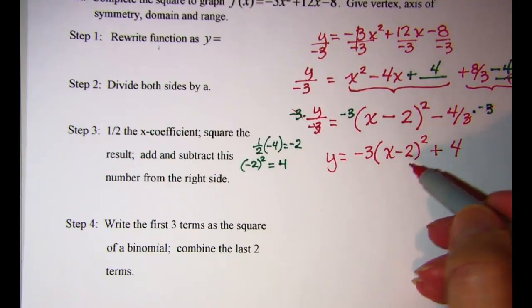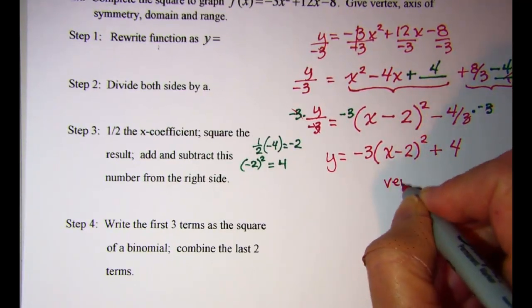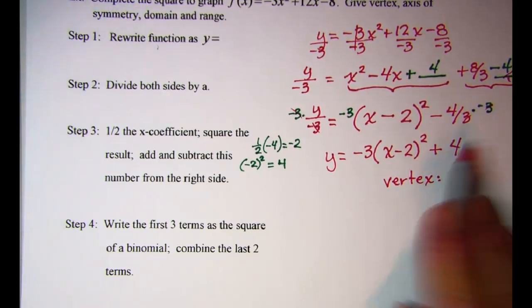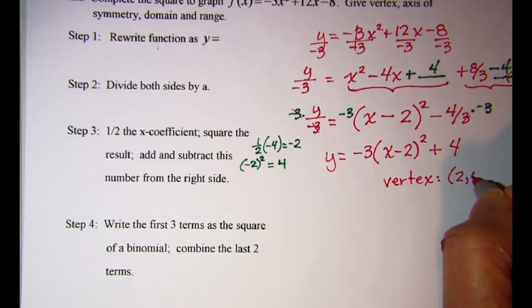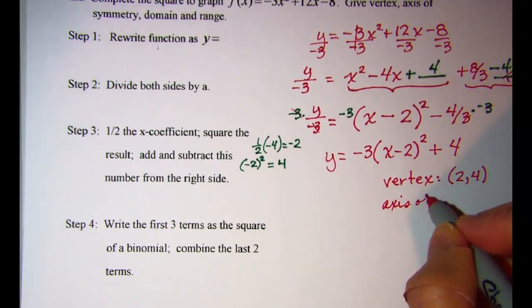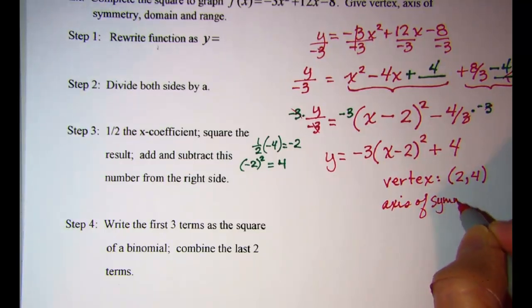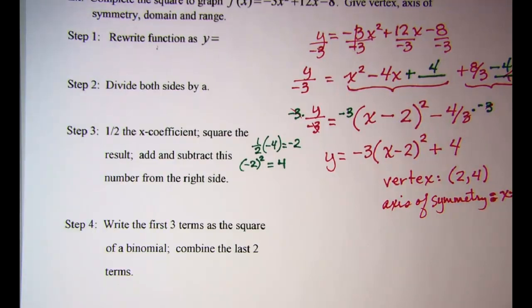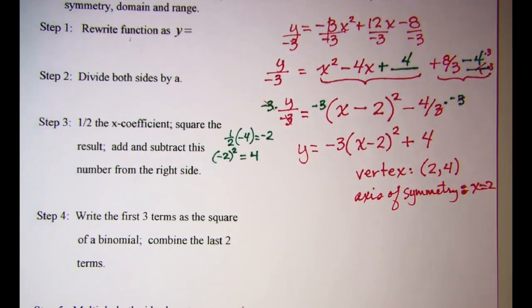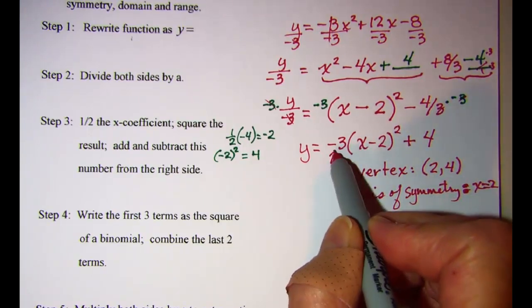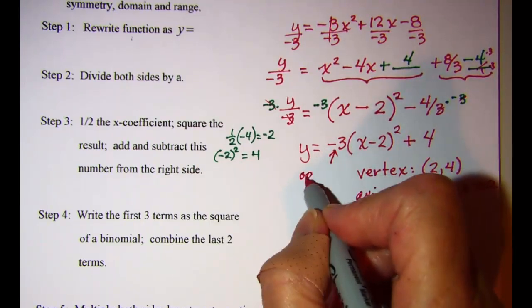Notice on this one, my vertex can be found from h, k, so my vertex is at (2, 4). My axis of symmetry is x equals 2. I see from this information a is negative 3, that my parabola opens down.